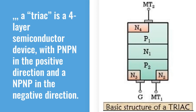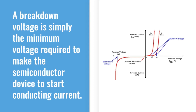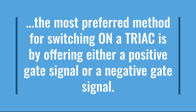Just like a thyristor, a TRIAC is a four-layer semiconductor device with PNPN in the positive direction and NPNP in the negative direction. If you apply a voltage to the TRIAC equivalent to the breakdown voltage, the TRIAC will go into the conduction state. A breakdown voltage is simply the minimum voltage required to make the semiconductor device start conducting current. The most preferred method for switching on a TRIAC is by applying either a positive or a negative gate signal.